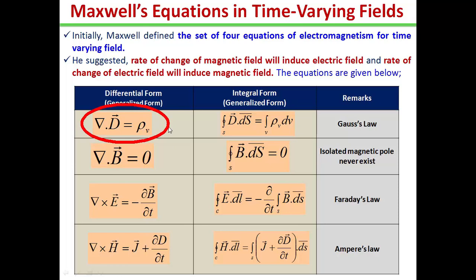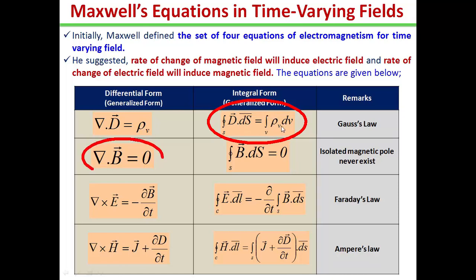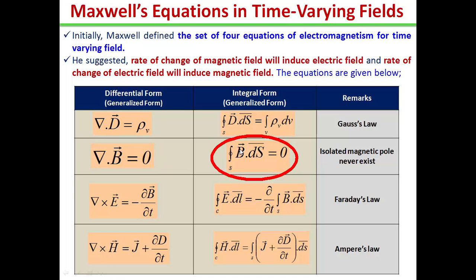In the differential form, the Gauss law of electrostatics — that is the first Maxwell equation — is written as ∇·D = ρ_v. And in the integral form, it is written as the closed surface integral D·dS = volume integral ρ_v dv. And Gauss law of magnetostatics, the second Maxwell equation, suggests that in the differential form ∇·B = 0, and in the integral form, the closed surface integral B·dS = 0.